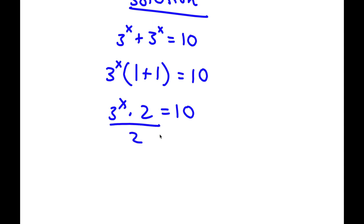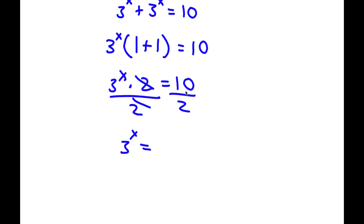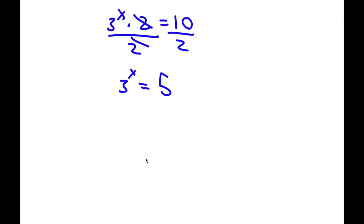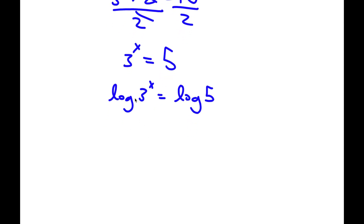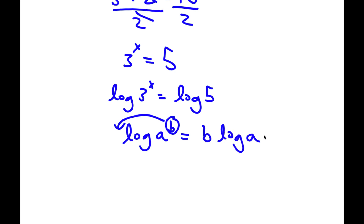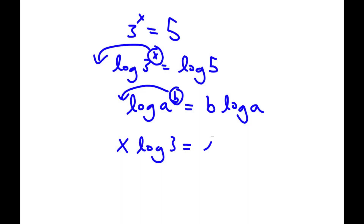Now I'm going to divide both sides by 2. These cancel out, and I'll be left with 3 to the power of x is equal to 10 divided by 2, which is 5. Now to solve this problem, I'm going to take the log on both sides. So now I have log of 3^x is equal to log 5. And an important property of logarithms is that if I have log of a to the power of b, I can move the exponent b to the front. So this equals b times log a. In this case, I have log 3^x, so I can move x to the front: x times log 3 is equal to log 5.